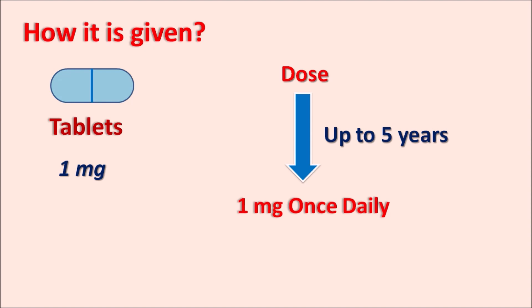This drug is available as a tablet at 1 mg strength. The dose is 1 mg once daily for long-term treatment, which may be extended up to 5 years. That's about this drug, anastrozole.